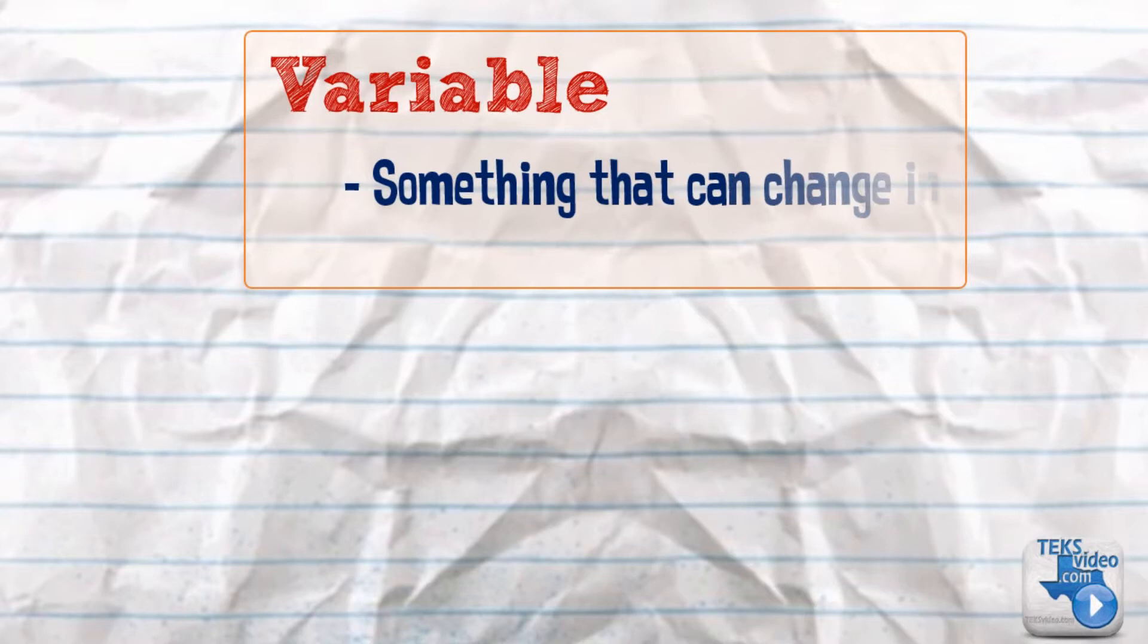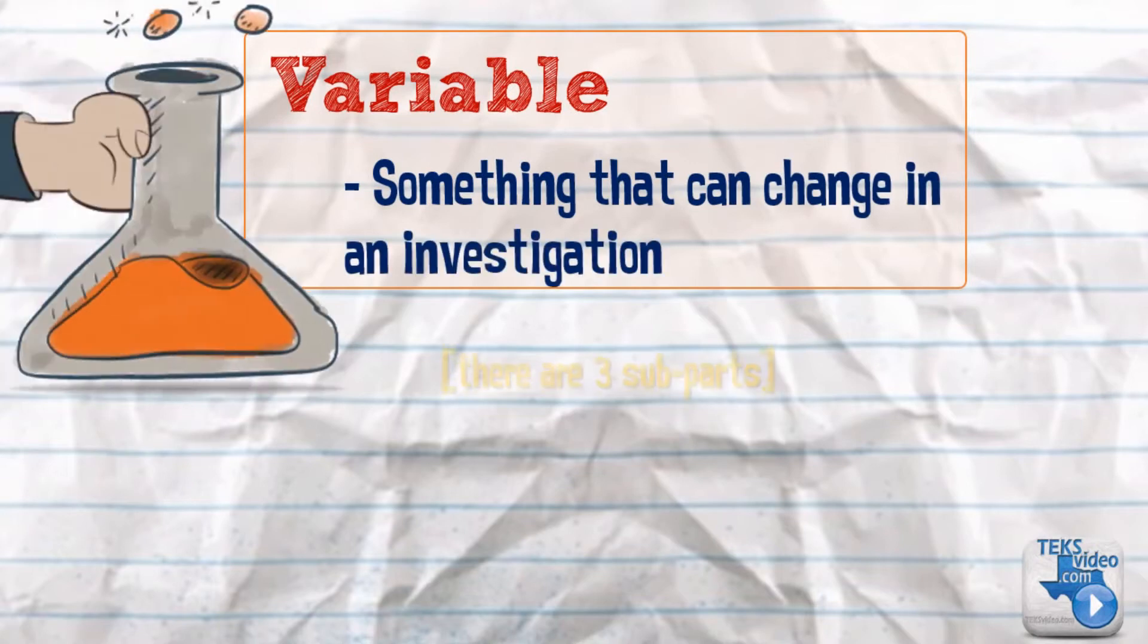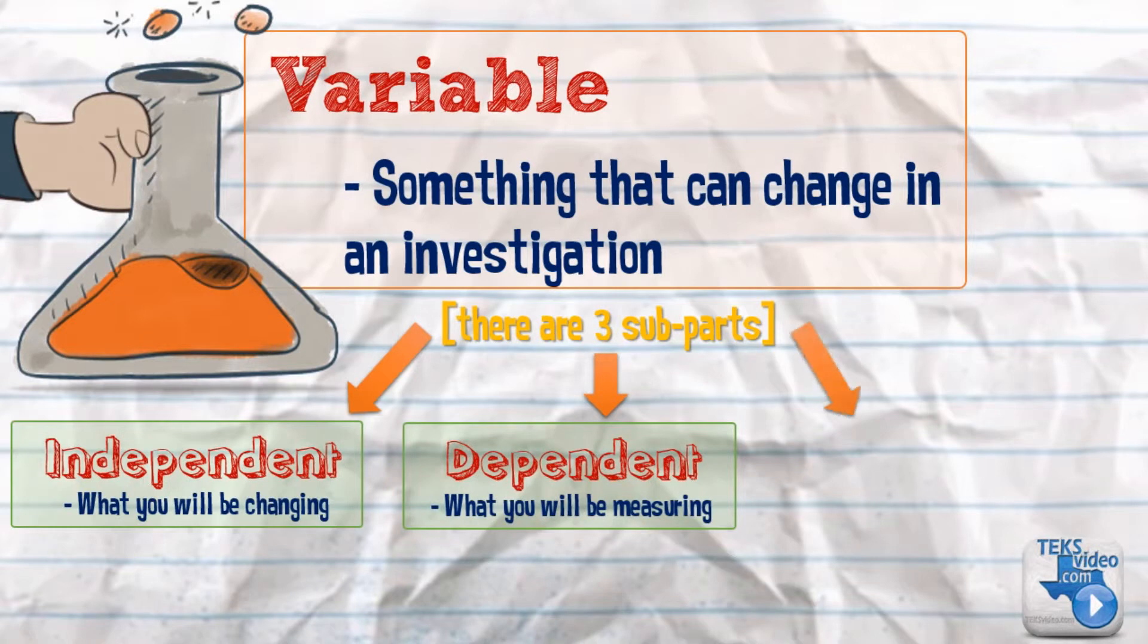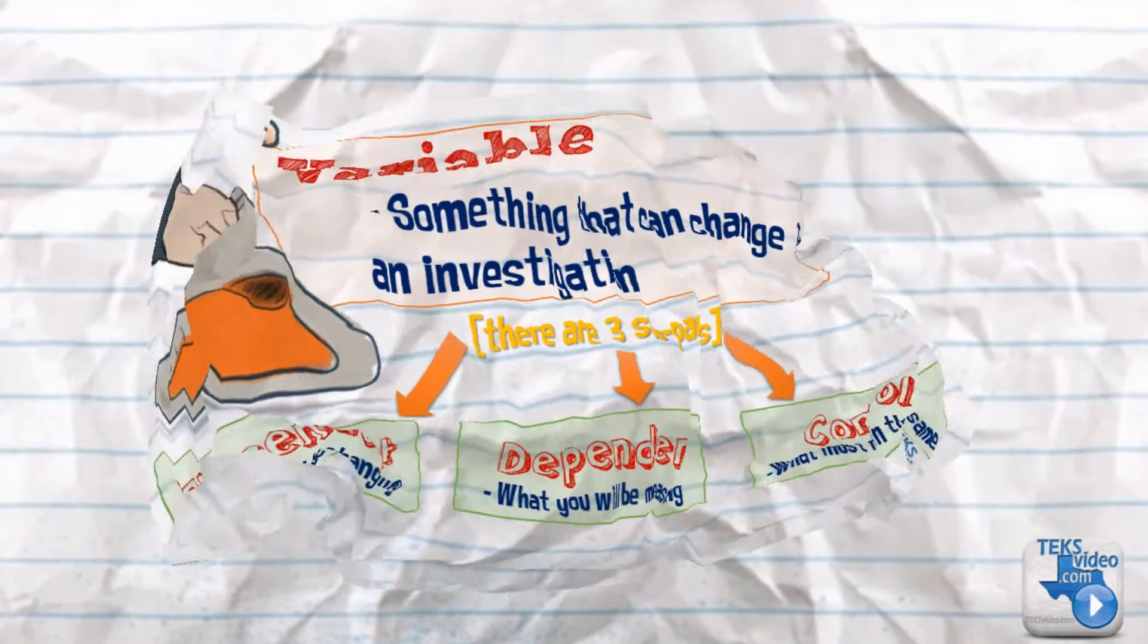A variable is something that can change in an investigation, and there are three sub-parts to it. Independent: what you will be changing. Dependent: what you will be measuring. Control: what must remain the same.